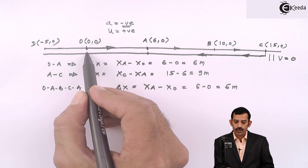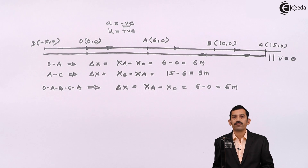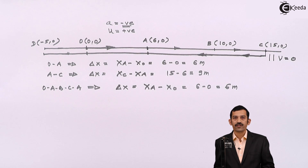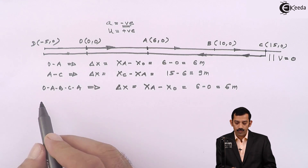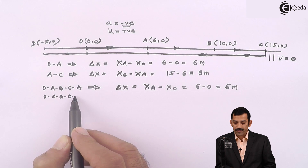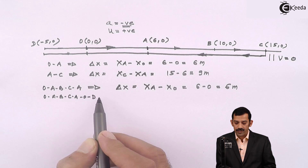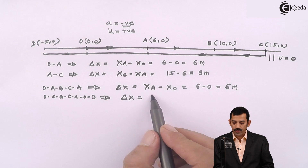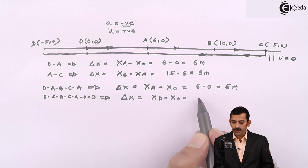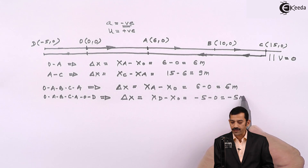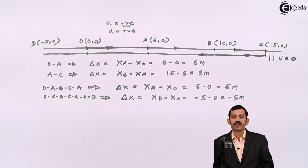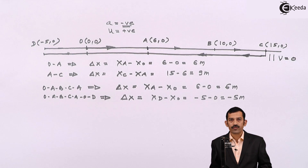For the full motion O → A → B → C → A → O → D, displacement depends only on the final and initial positions. Final position is D at −5, initial is O at 0, so displacement = −5 − 0 = −5 meters. Displacement may be positive, zero, or negative — it is a vector quantity, always equal to final position minus initial position.